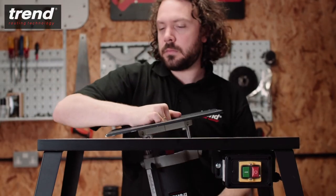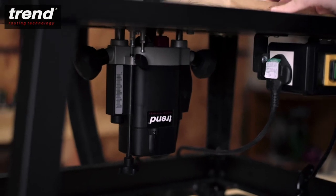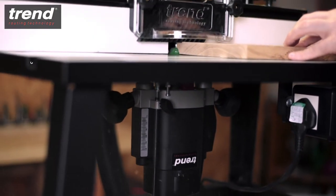There are two threaded holes in the base which allow other accessories to be fitted or for mounting in a router table.